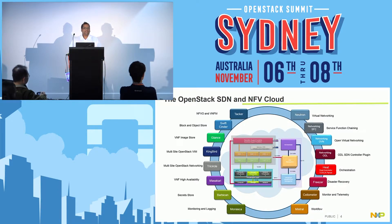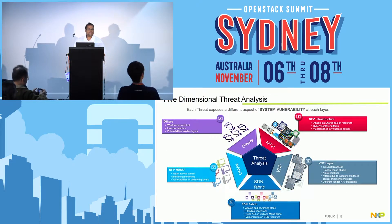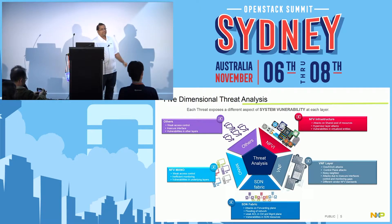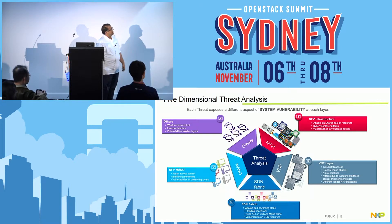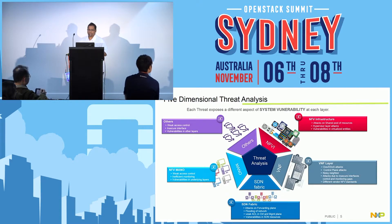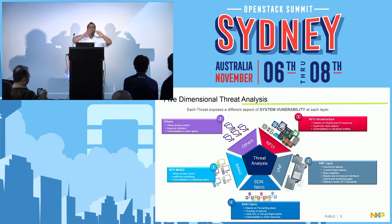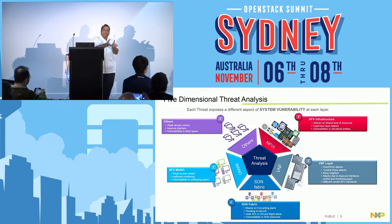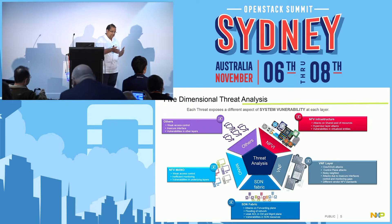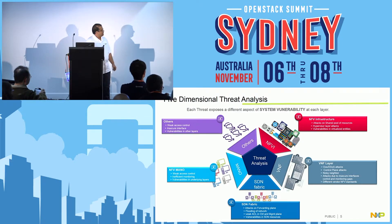Based on these projects, we have done a five-dimensional threat analysis taking into consideration the NFV end-to-end architecture, where we have the NFV infrastructure with hardware devices. The attacks are on the shared pool of resources and at the hypervisor level, with vulnerabilities in virtualized entities. Moving up from the infrastructure, we spawn the complete virtualized network functions where DDoS attacks are more possible, and noisy neighbor attacks can exhaust the shared resources in the infrastructure.